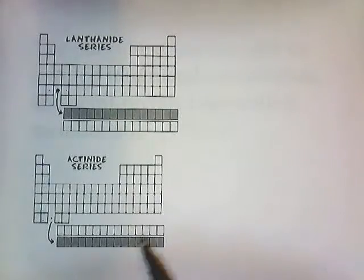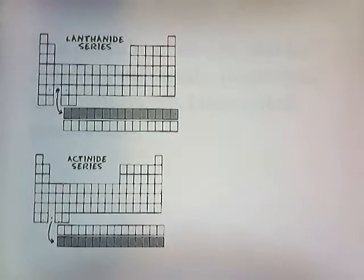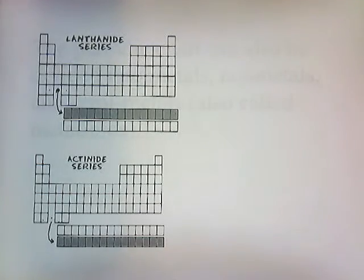These lanthanides and actinides are separated from the main chart because they have distinct electron configurations and because the chart's easier to look at when these groups are placed on the bottom.